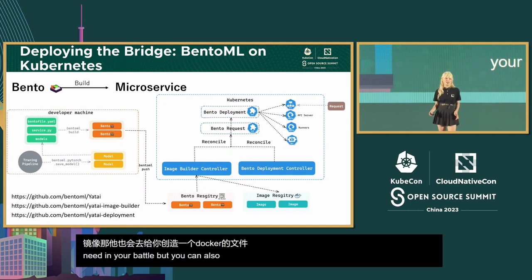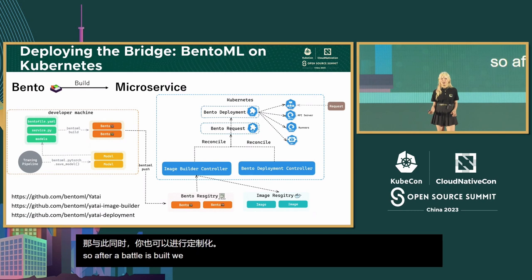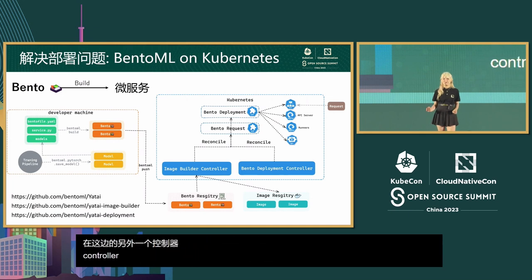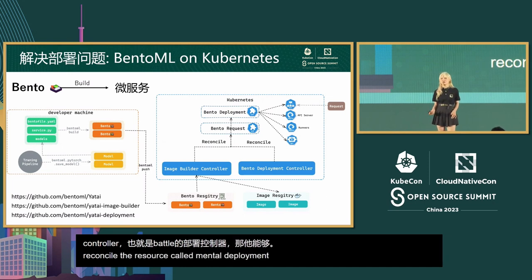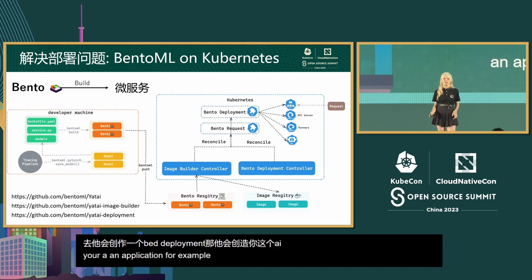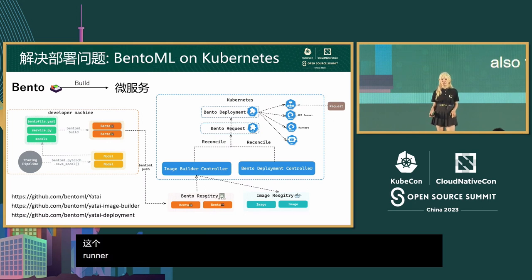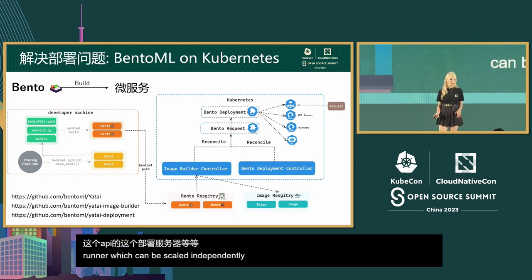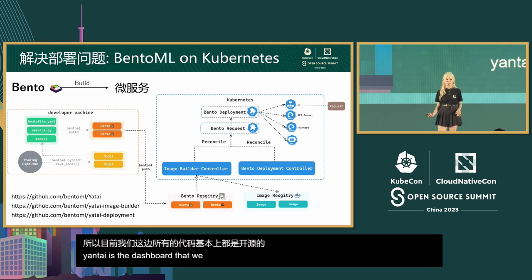You can also specify and customize it in your Bento file. After the Bento is built, we can deploy it. A Bento deployment controller uses the built image and reconciles the BentoDeployment resource — creating all the resources for your AI application: the service, the HPA, and also the deployments for API server and runner, which can be scaled independently. Yatai is the dashboard we provide so users can easily serve Bentos in the cluster.